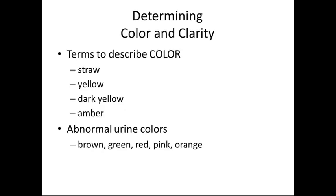Determining the color and clarity: terms used to describe normal urine color are straw, yellow, dark yellow, and amber. Some abnormal urine colors include brown, green, red, pink, or orange.